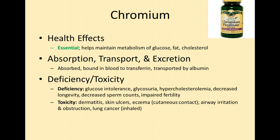Moving on to essential trace elements — first is chromium, available as chromium picolinate supplements. We take it to support glucose metabolism, as well as fat and cholesterol metabolism; it may help type 2 diabetics. It is absorbed and bound to transferrin, transported by albumin. Deficiency can cause glucose intolerance, glycosuria, hypercholesterolemia, decreased longevity, decreased sperm counts, and impaired fertility. Excess chromium can cause dermatitis, skin ulcers, eczema, airway irritation, and lung cancer if inhaled.